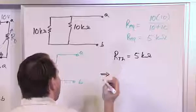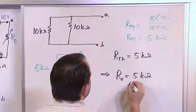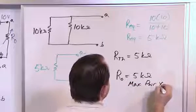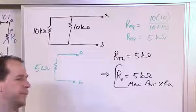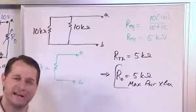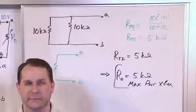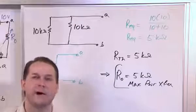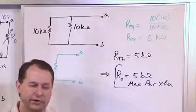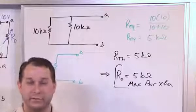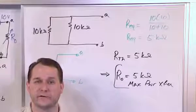The Thevenin resistance is 5 kiloohms, which means for maximum power transfer, R naught must also equal 5 kiloohms. If you hook up anything different — say 4,000 ohms or 6,000 ohms — you'll get less than the maximum possible power delivered. Only at 5 kiloohms do you achieve the maximum power that can be delivered to the load given this circuit.